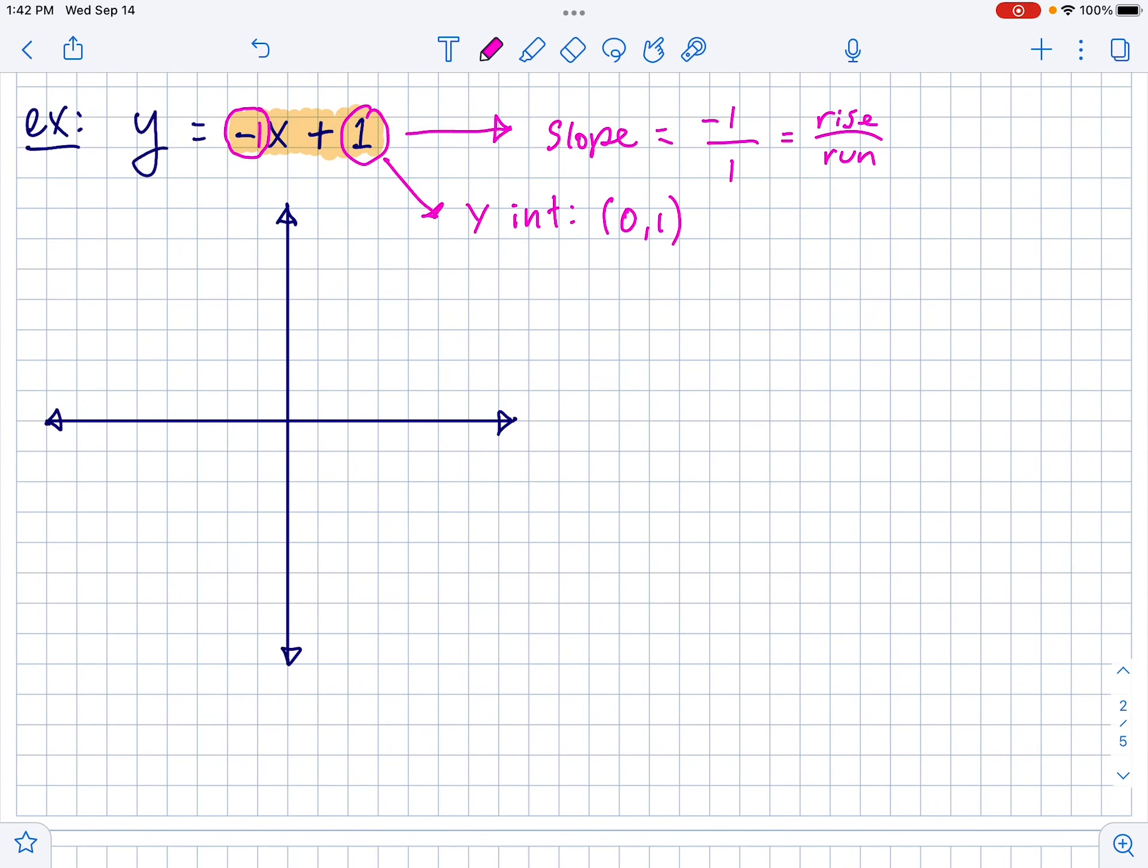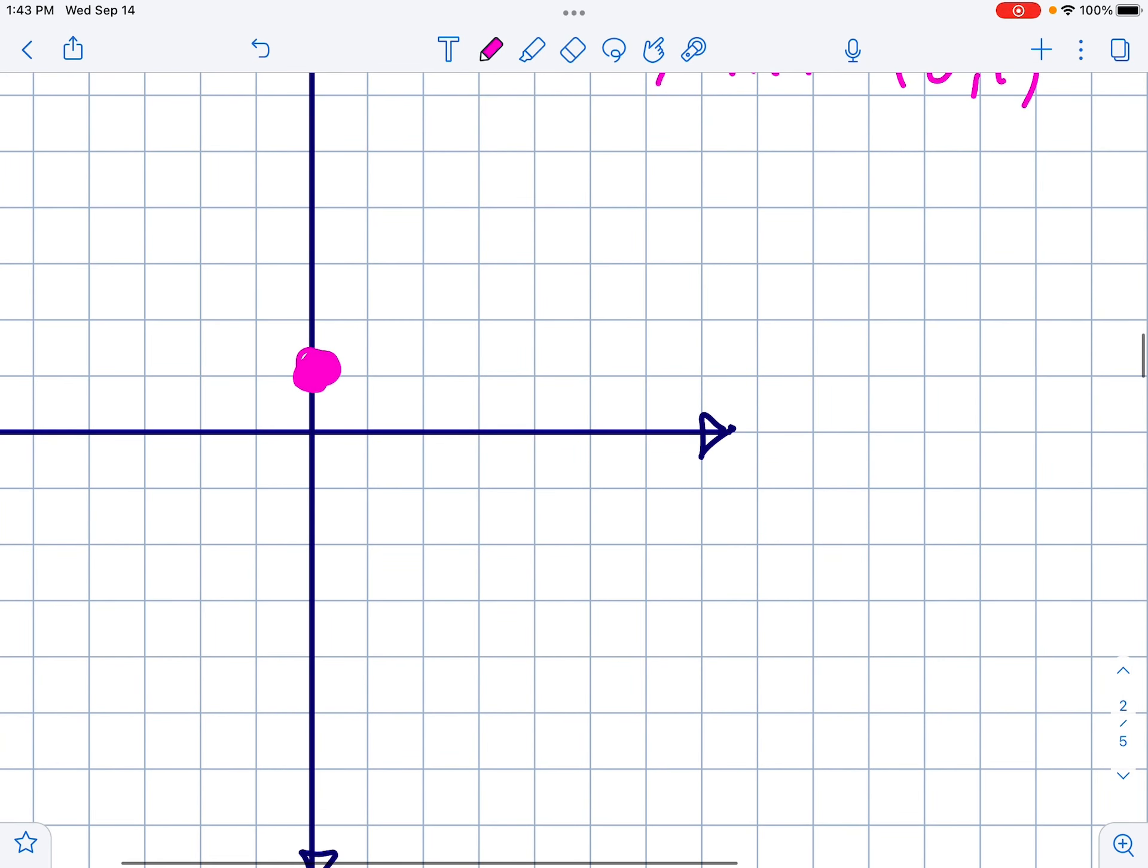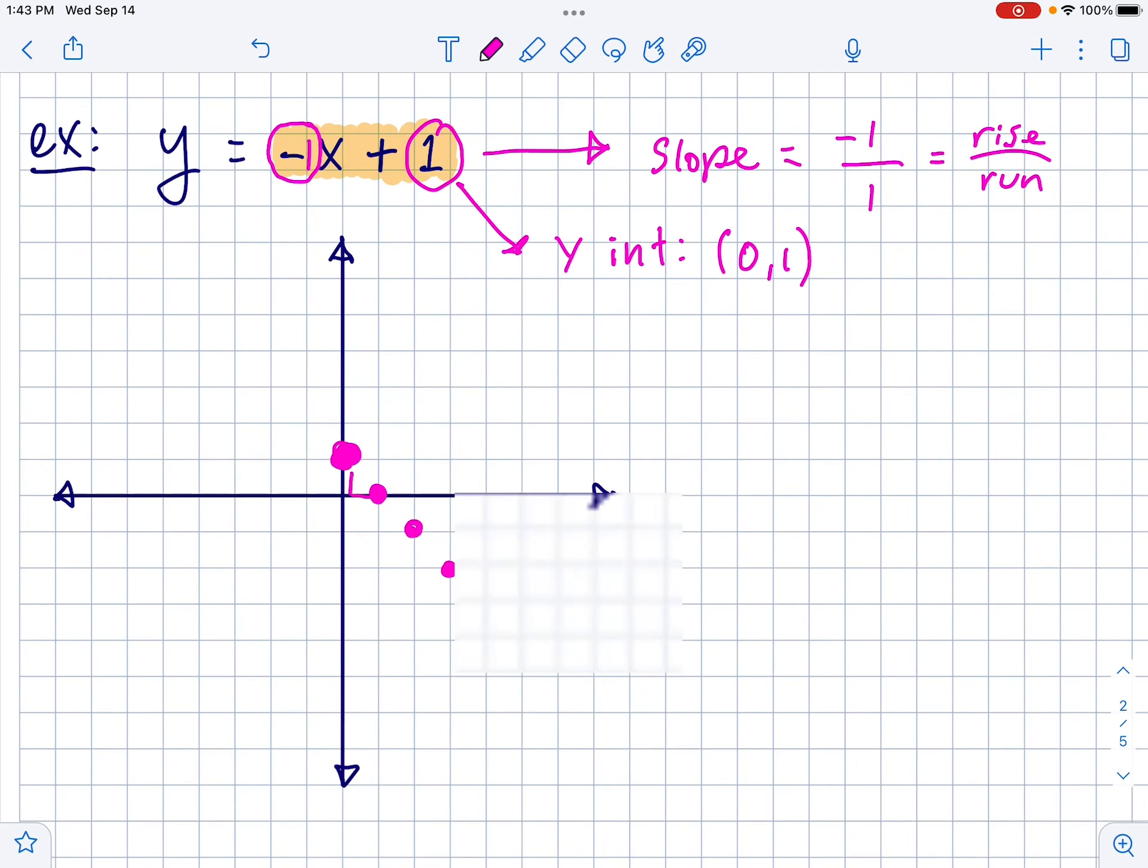So let's start with the y-intercept, which is 0, 1. Then we're going to go down 1 over 1. So if I go down 1 over 1, so down 1 over 1, here's the next point. Then down 1 over 1 again. Here's another 1, another 1. You could even go backwards this way and put some of them over here if you like. But then you can draw a line connecting those. So this is a decent sketch of y equals negative x plus 1. I guess I could label it if you guys want. That's what it looks like. Slope of negative 1 goes through 1.